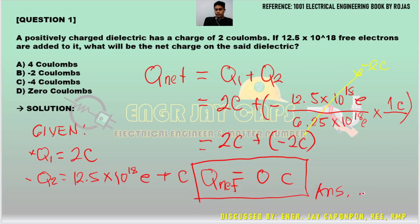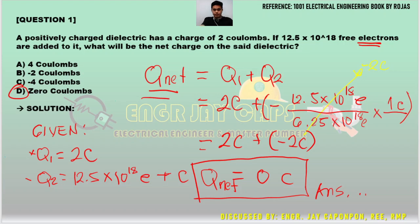That is the final answer for question number one. The answer is letter D — zero coulombs. When you forget the negative sign you will arrive at letter A. We came up with the negative sign because of electrons. Q_net is what we are looking for.